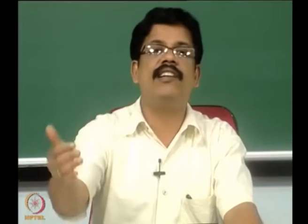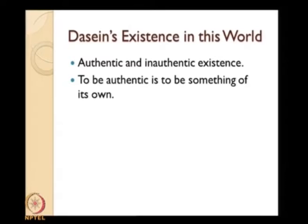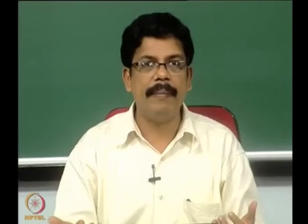Heidegger now discusses that Dasein can exist in two different ways: authentic existence and inauthentic existence. In authentic existence you take responsibility for what you do; you are what you are. In inauthentic existence, it is still Dasein which is inauthentic — you are not your usual self. To be authentic is to be something of one's own. There are occasions where I am not my own, where I do not own myself.